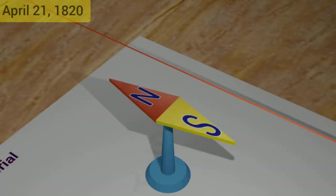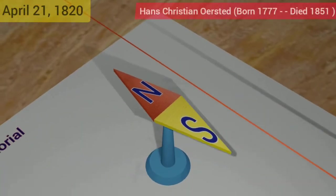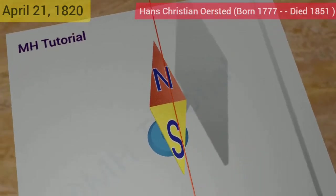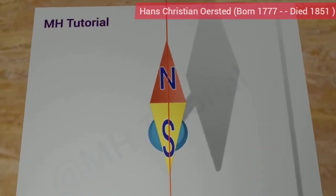On April 21, 1820, Danish physicist Hans Christian Ørsted noticed that a steady current carrying wire can deflect a nearby magnet.